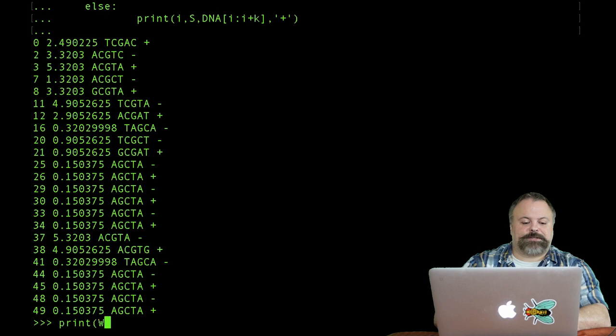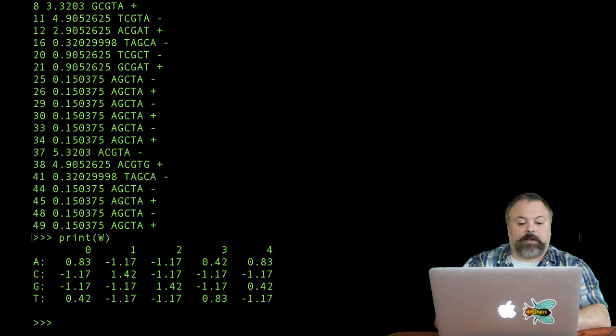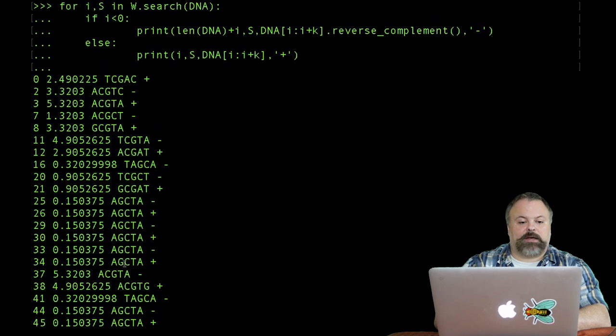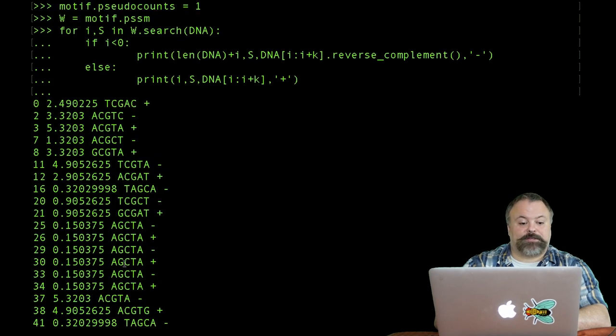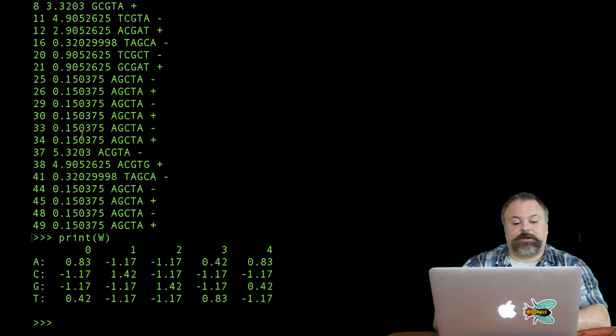We get a lot more positions. Our W matrix or PSSM now no longer has negative infinite terms. We get a lot more positions. Our original positions are still in there and they're going to be the highest scoring examples. But along with a lot of other lower scoring examples because we no longer have those negative infinities.